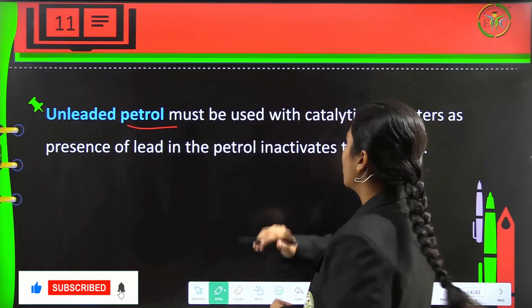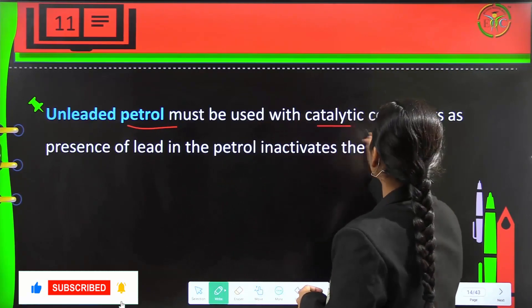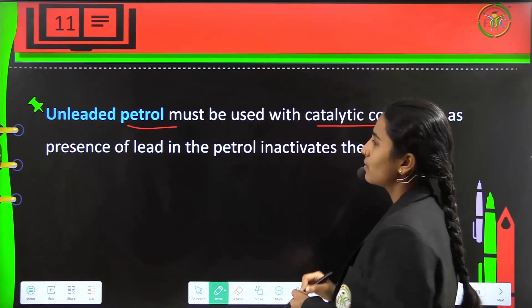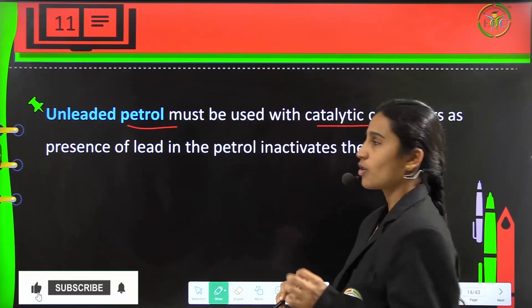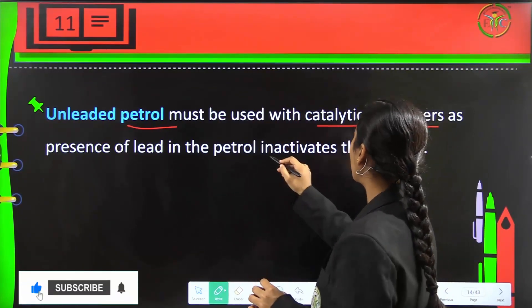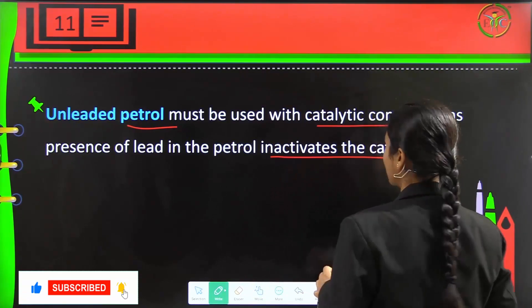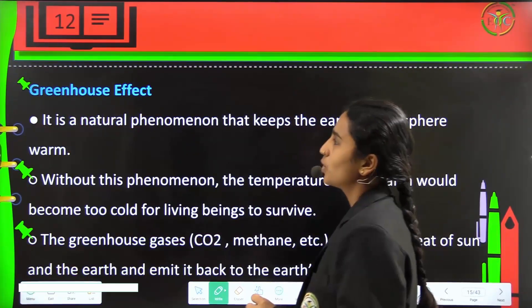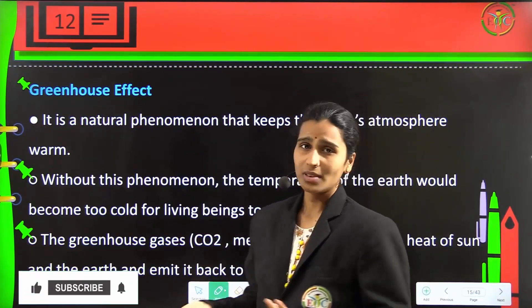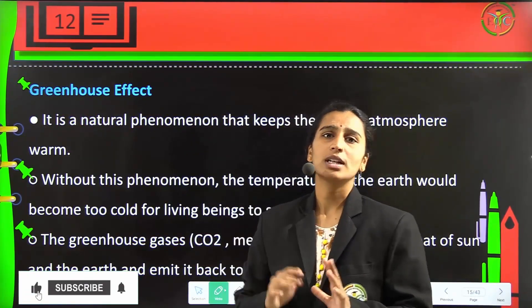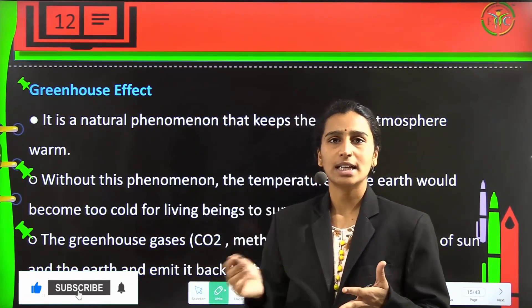Next is unleaded petrol. This must be used with catalytic converters as the presence of lead in the petrol will inactivate the catalyst. The petrol will inactivate the catalyst if lead is present.